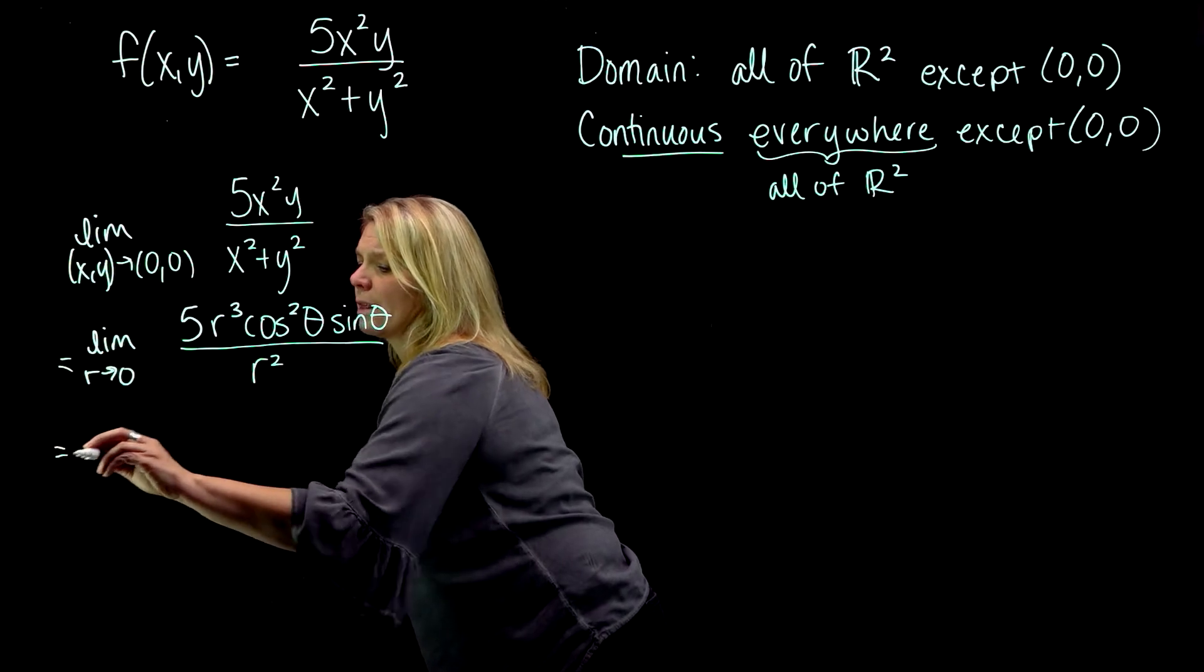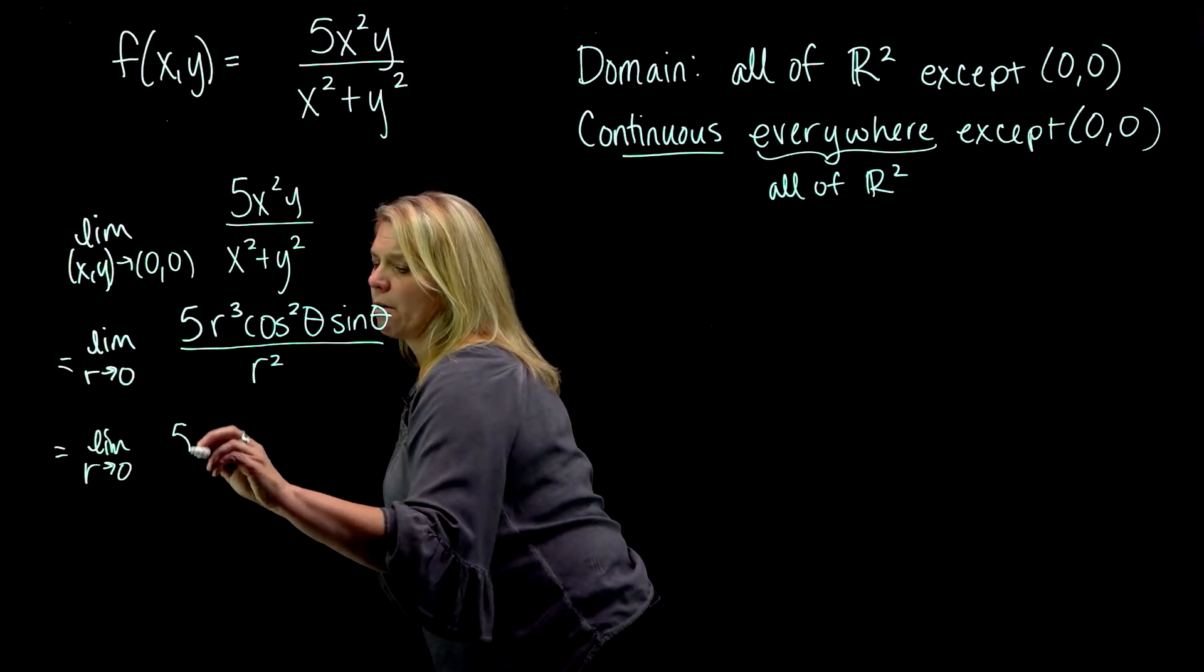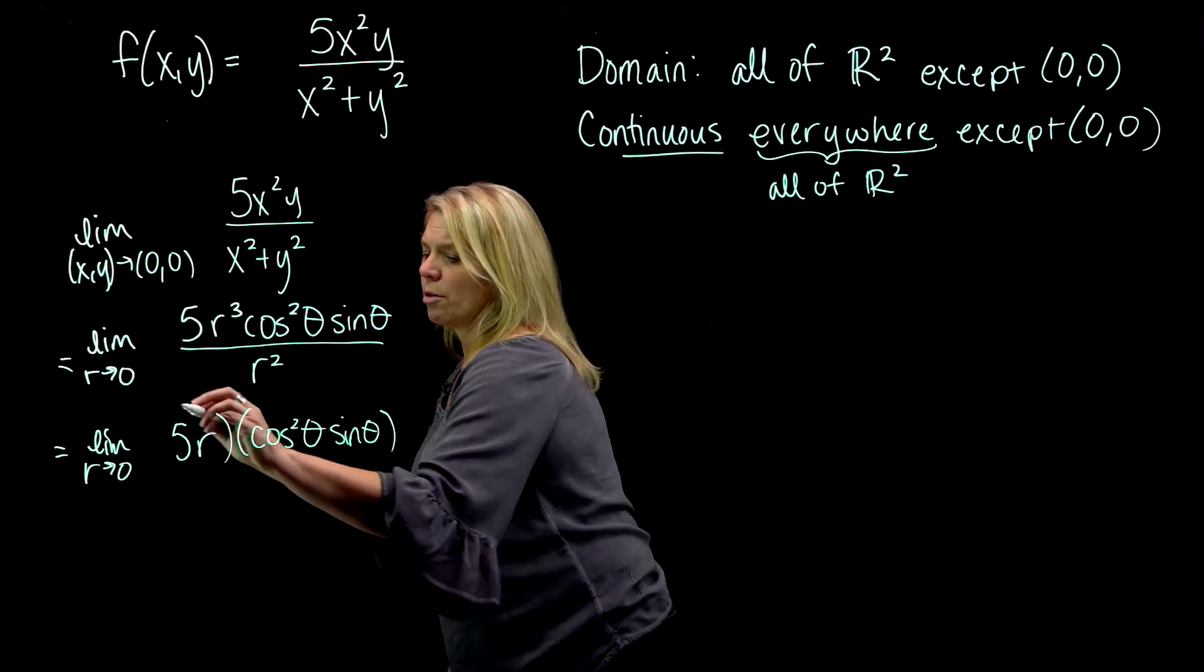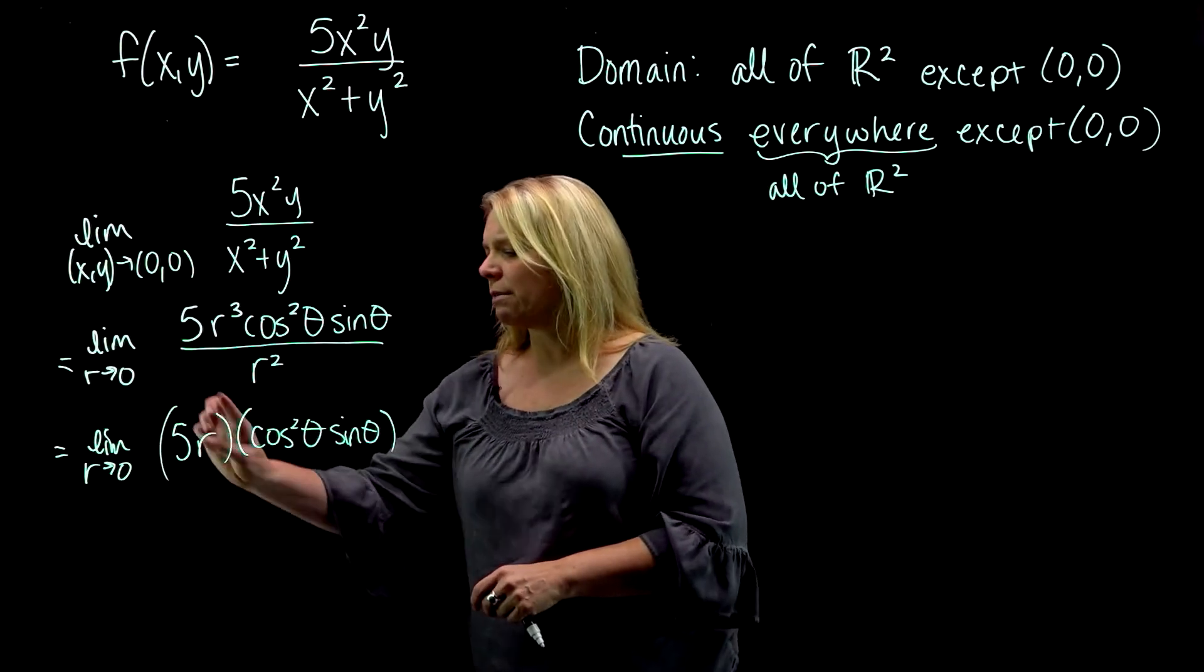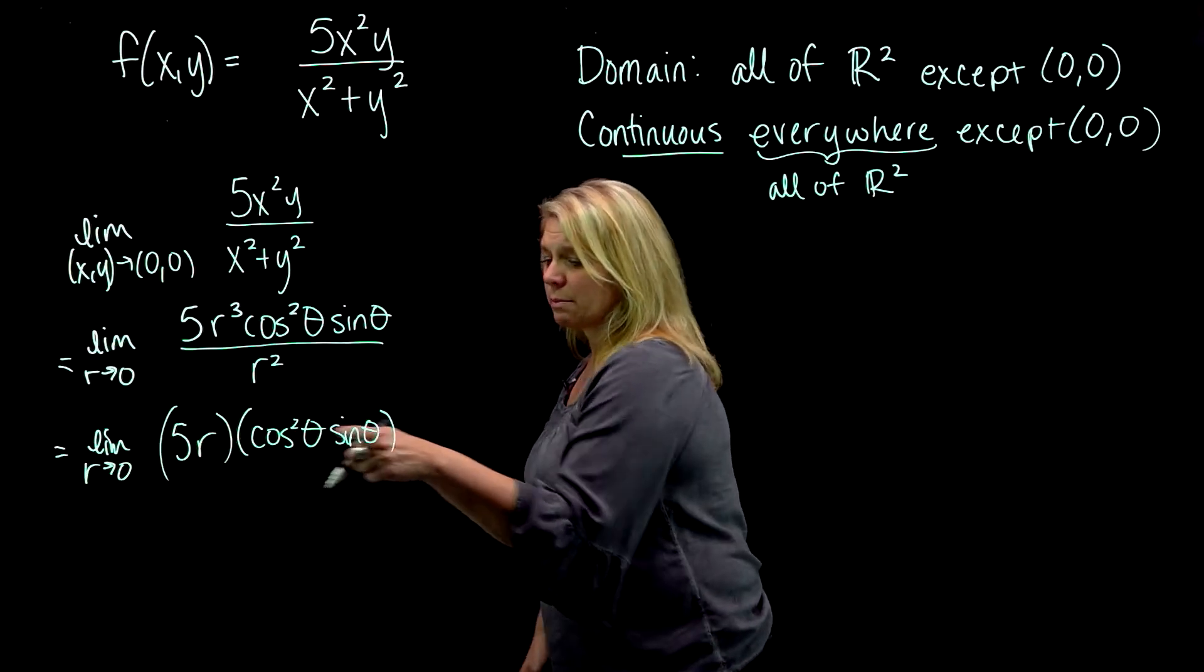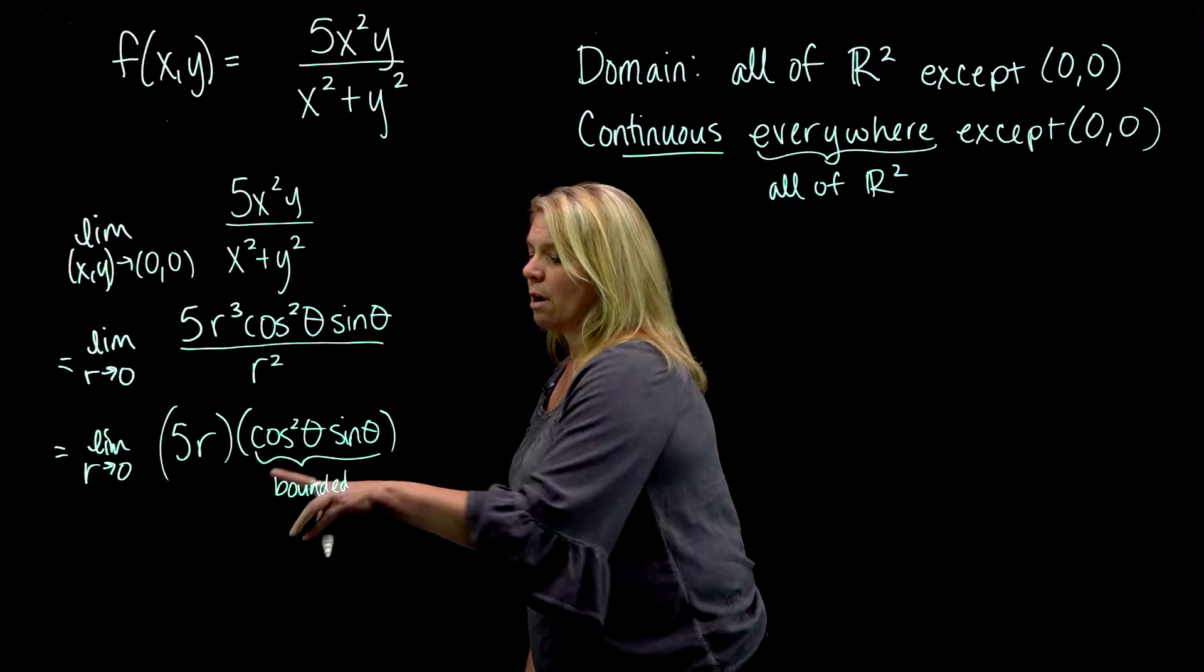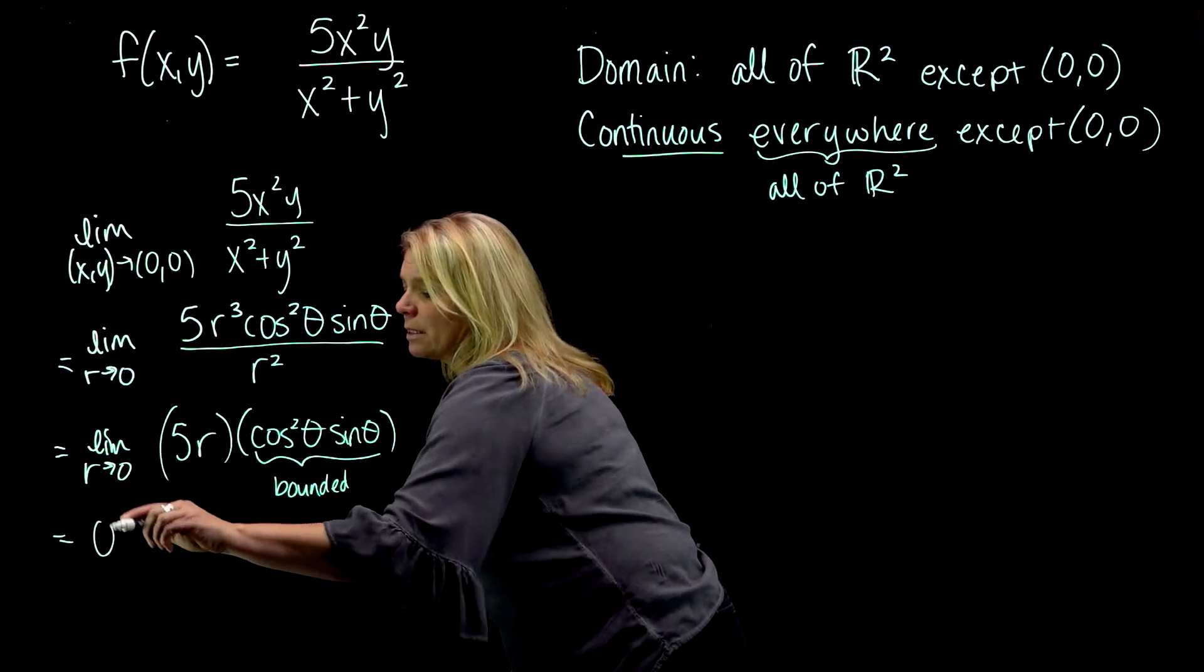And so we're left with limit as r approaches zero of 5r times cos²θ sinθ. And I grouped this, as I did in that previous video. r is approaching zero. This part here approaches zero. And the other key component here is that this part stays bounded, stays finite. So when I have something approaching zero times something that stays finite, this limit will be zero.